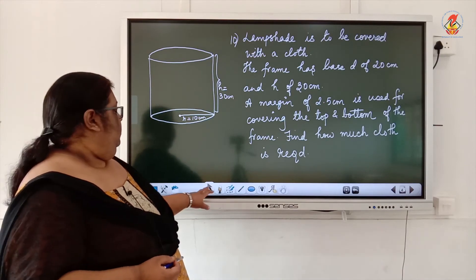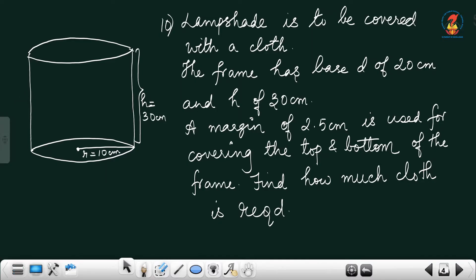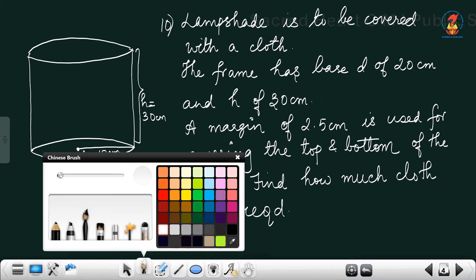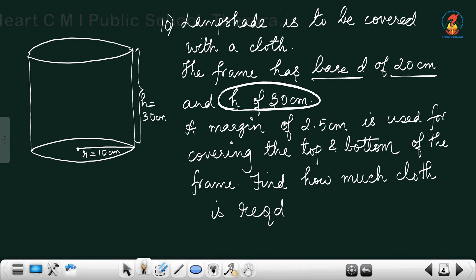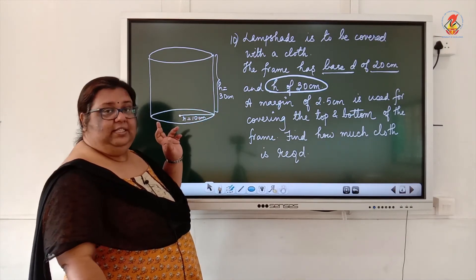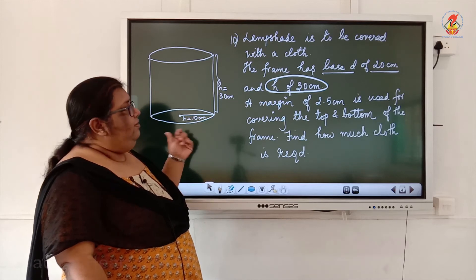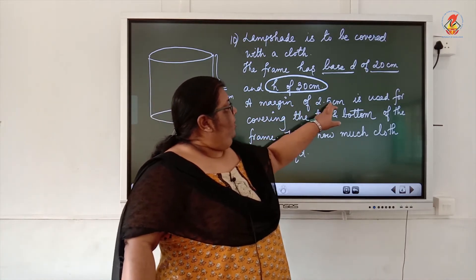Question 10: A lampshade is to be covered with cloth. The shape of the lampshade is cylindrical. The frame has a base diameter of 20 centimeter and height of 30 centimeter. So radius = 10 centimeter, height = 30 centimeter. A margin of 2.5 centimeter cloth is used for covering the top and the bottom of the frame.